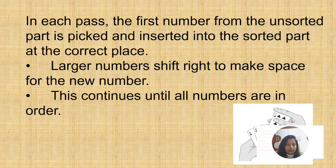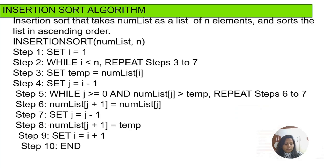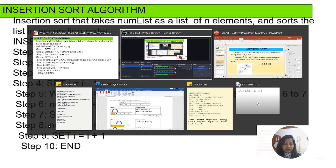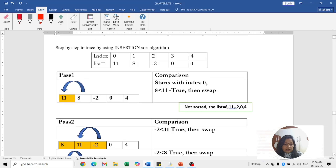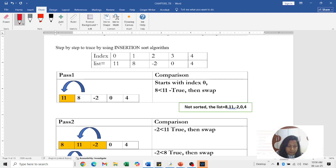This continues until all numbers are in order. Before going to the algorithm, we are going to check the tracing. You can see here this is the insertion sort tracing. I am giving the elements: the name of the list is [11, 8, -2, 0, 4]. Now, pass 1 — the comparison will start with index 0.